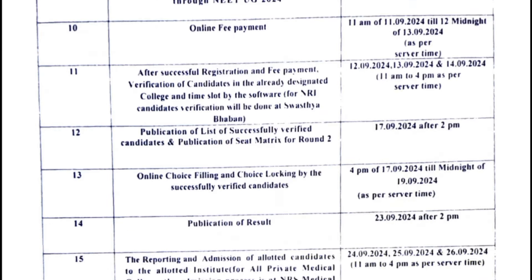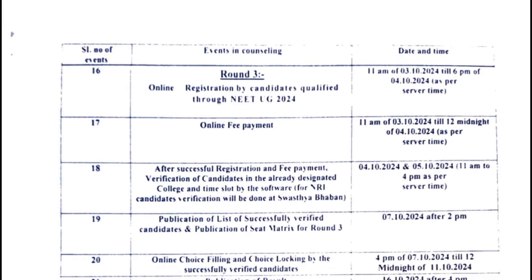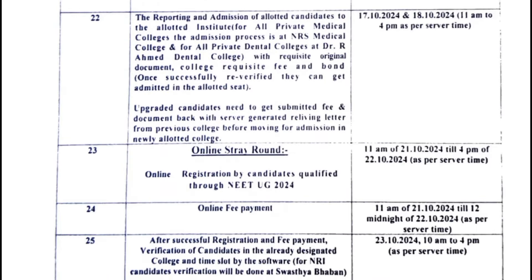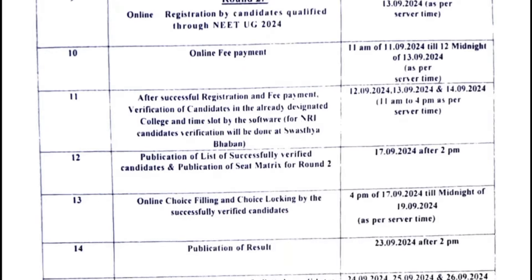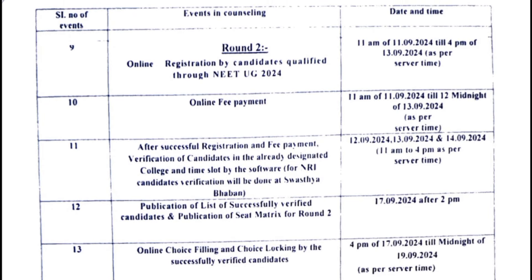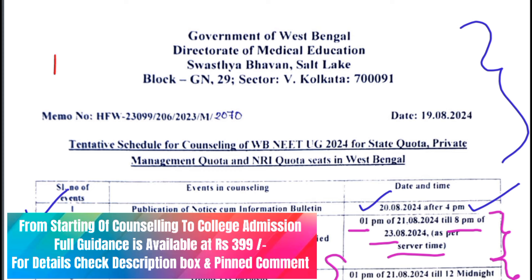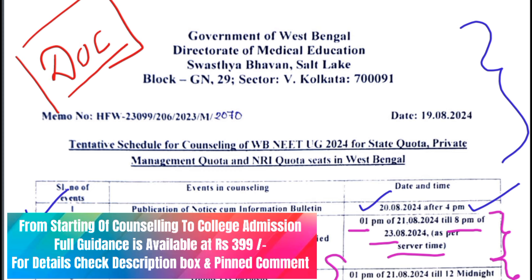Then Round 2, Round 3, and stray vacancy rounds will follow. As we discussed, the counseling deal will be maximum 2 days so they will be finished quickly. You have to prepare your documents for verification.